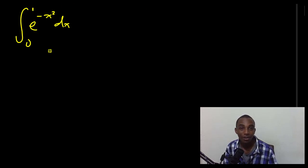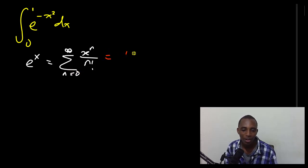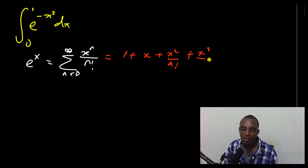So let's begin with something that we are familiar with. We know that the exponential function e to the x is described by the following series: the summation from n equals 0 to infinity of x to the power n over n factorial. I could just write this down as when n is 0, that's 1. When n is 1, that's x. When n is 2, that's x squared over 2 factorial. When n is 3, x cubed over 3 factorial.